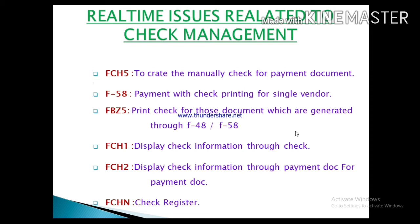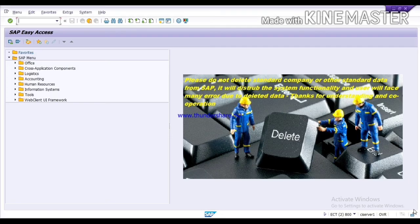Today I am going to share some T-codes by which you can solve your check-related issues. The first is FCH5. By this T-code you can create a check manually for any payment document. For example, if you have already posted a payment document and later want to create a check manually for that document, you can use T-code FCH5. Let's go to the SAP screen and see how to perform this.